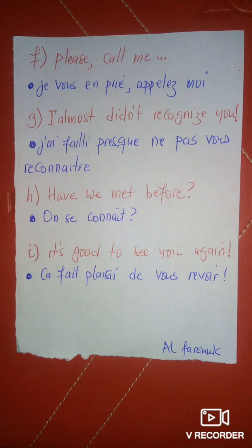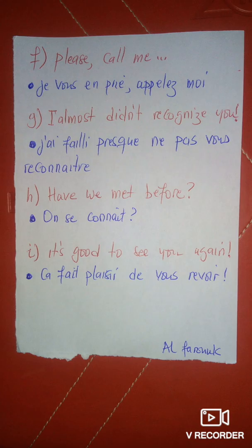La phrase G : « I almost didn't recognize you. » La traduction en français : j'ai failli ne pas vous reconnaître. La phrase H : « Have we met before ? » La traduction littérale c'est : nous sommes-nous rencontrés auparavant ? C'est un peu lourd, mais on peut l'alléger parce que le sens c'est : est-ce qu'on se connaît ?